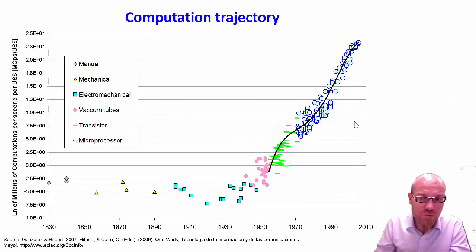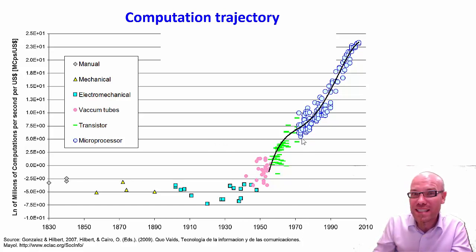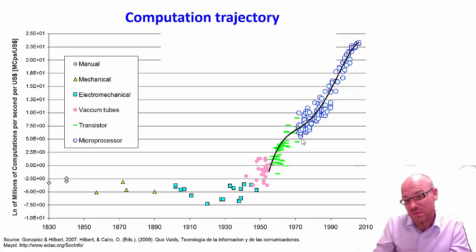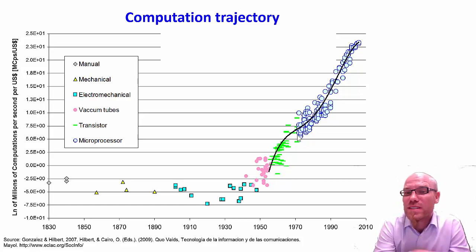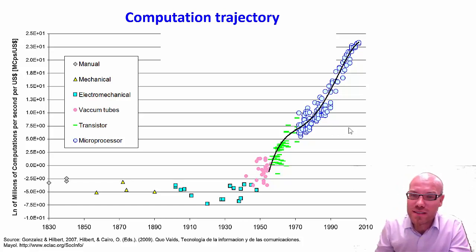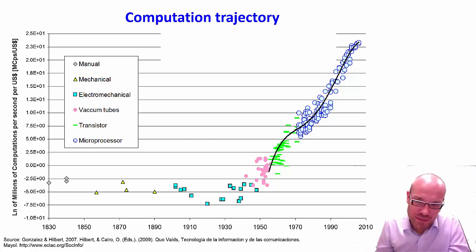The same we can see very clearly in computation. The performance measure here is computations per second per US dollar, and you can see that in the 1970s something qualitatively different seemed to have happened. It started to hit a wall and go straight up. Computational power with the digital microprocessor — all of these blue circles here — started to explode, increasing exponentially.